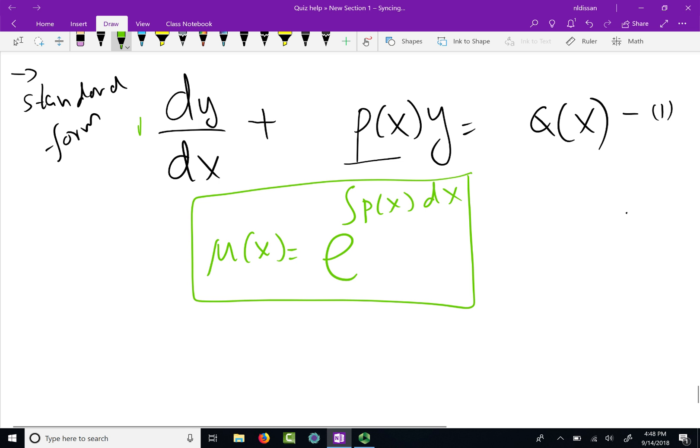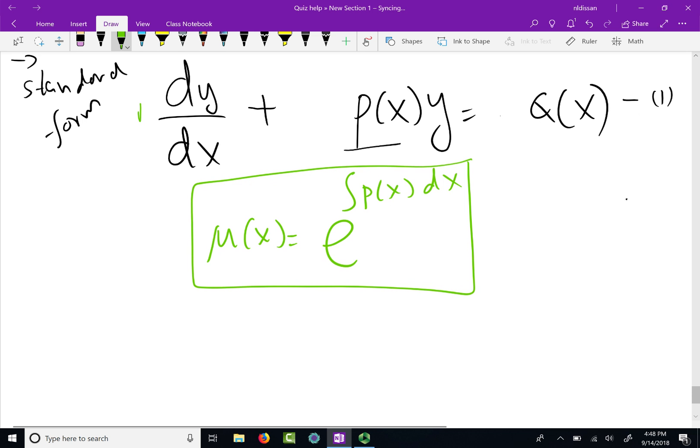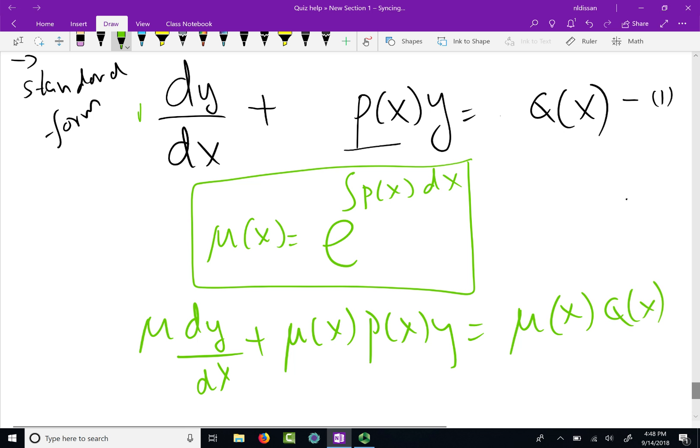Now, what should you do after you find the integrating factor? Well, next thing you should do is you multiply the whole equation by that integrating factor. So let us multiply equation 1 by μ, the standard form. So μ times dy over dx. Now at this point we know what is μ by using the formula that is inside the box. So this is what we get after you multiply by μ.